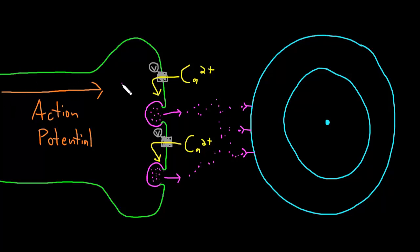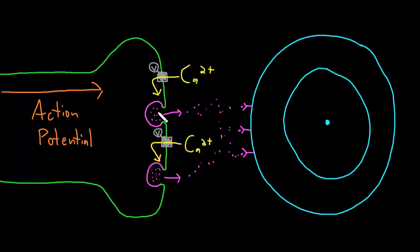When the train of action potentials stops firing, the voltage-gated calcium channels close, calcium stops flowing into the axon terminal, and the normal processes that push calcium out of the neuron quickly lower the calcium concentration in the axon terminal. As a result, synaptic vesicles stop fusing with the presynaptic membrane and neurotransmitter release stops.